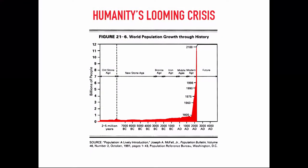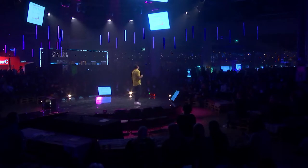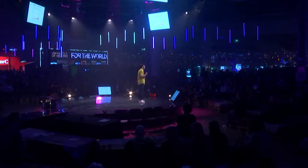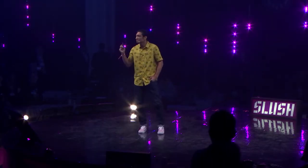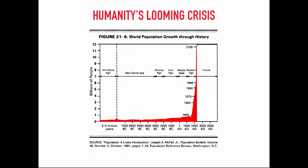But really, what I want to talk to you about today is humanity's looming crisis. On the screens in front of you, you can see the world population through history. If you look back all the way to proto-humans five million years ago, the world population hasn't changed in almost five million years — until about 200 years ago, when there was a huge spike. What caused this spike? Heroes like Louis Pasteur and Joseph Lister and the dawn of medicine. Agriculture was 10,000 years ago and didn't really move the needle. But medicine changed everything.